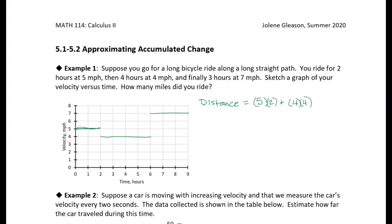So I can multiply those to get the total distance. And finally, I went seven miles per hour for three hours, so I can multiply seven times three to figure out how far I went during that last segment.